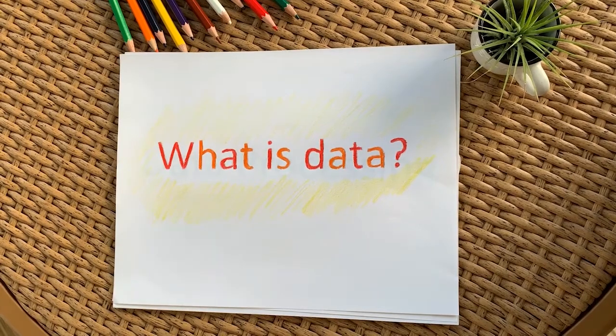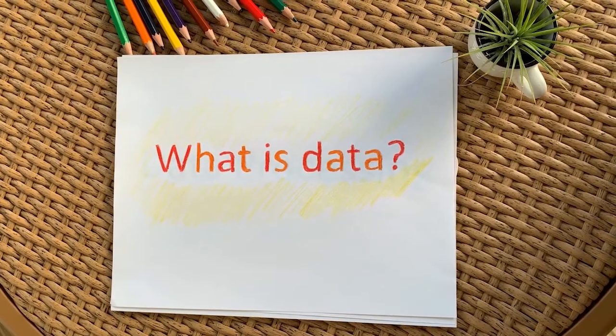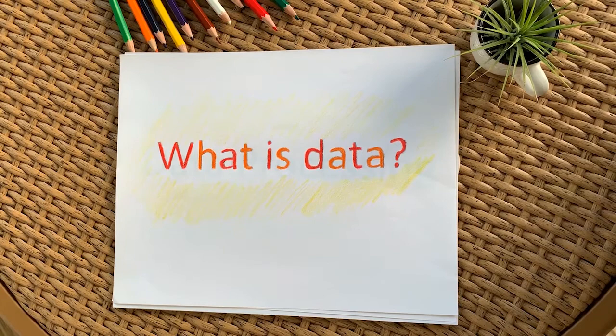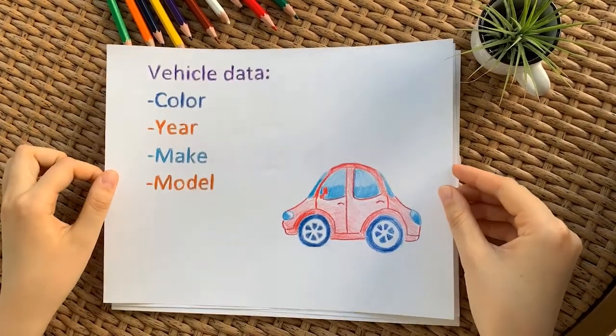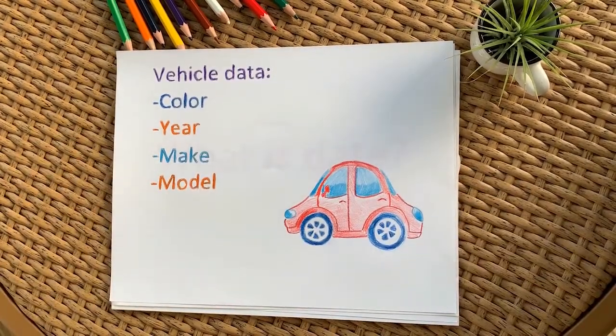One kind of data that CDK mainly deals with is vehicle data. Some of the data that we can extract from a vehicle could be its color, year, make, or model.